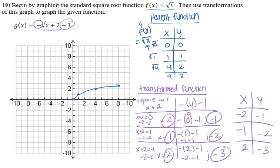Now we can graph the transformed function using our new points. We plot (-2, -1), (-1, -2), and (2, -3) on the axes. That's where it starts, and the graph goes like that — and that is your transformed graph.